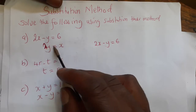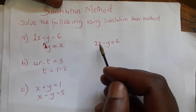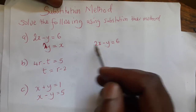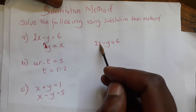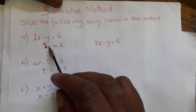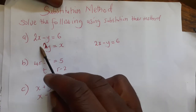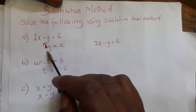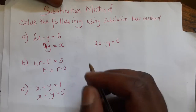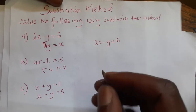So this is substitution — where there is an x, instead of x, we'll be substituting x for 2y. This is 2y here. Take note of that.